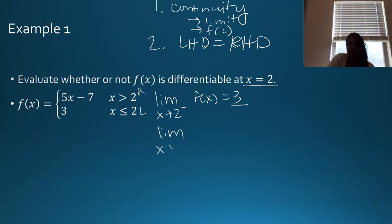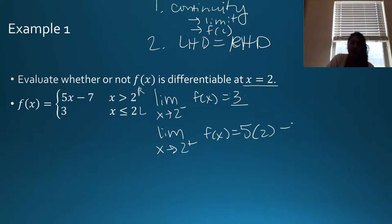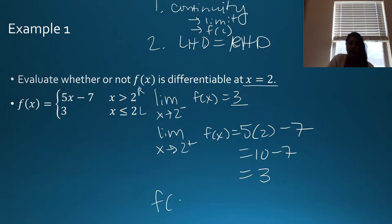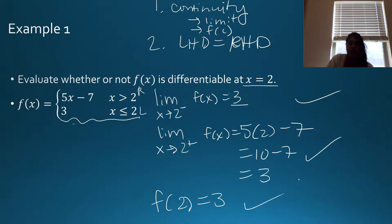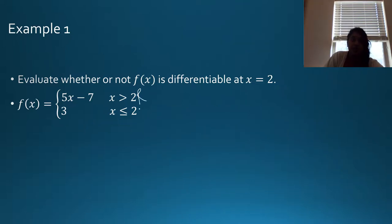My limit as x approaches 2 from the right of f(x) is 5x − 7, so 5(2) − 7 = 10 − 7 = 3. My function value is also equal to 3. So my limits exist, my function value exists — this whole thing is continuous. But we still don't know whether it's differentiable.